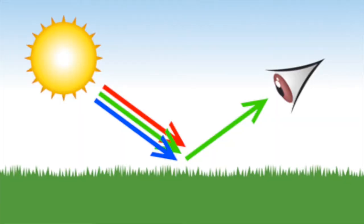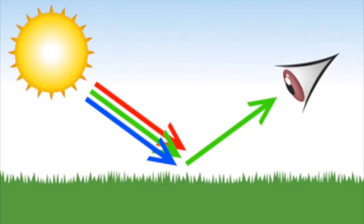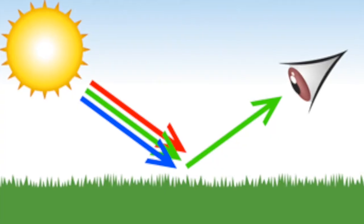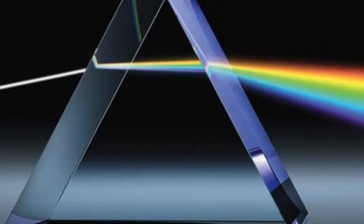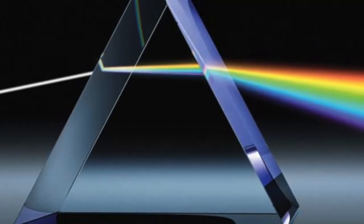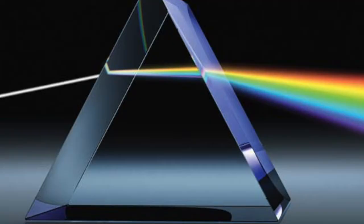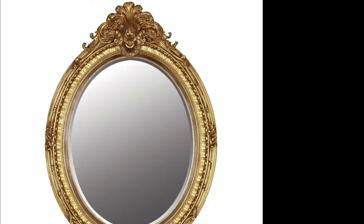Light can reflect and refract. Reflection means that light will bounce off something. Refraction, on the other hand, means that light will change its speed and direction when traveling in a new medium.